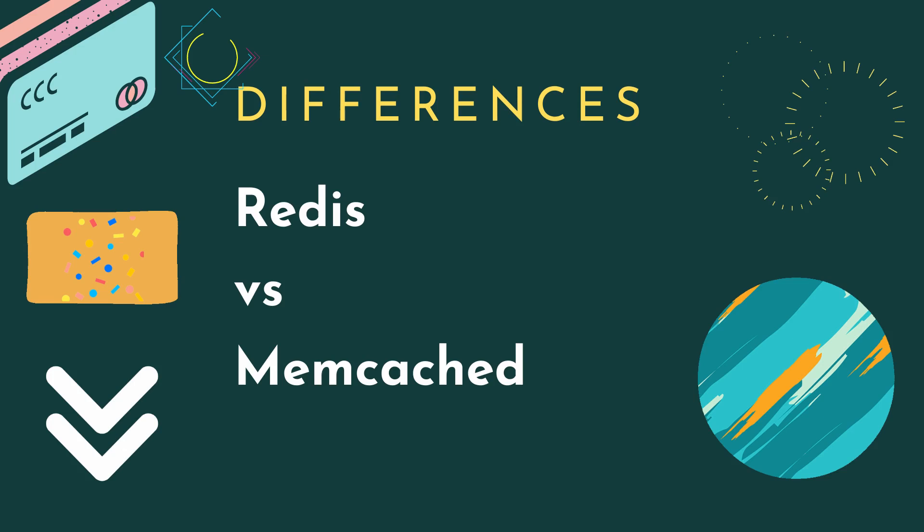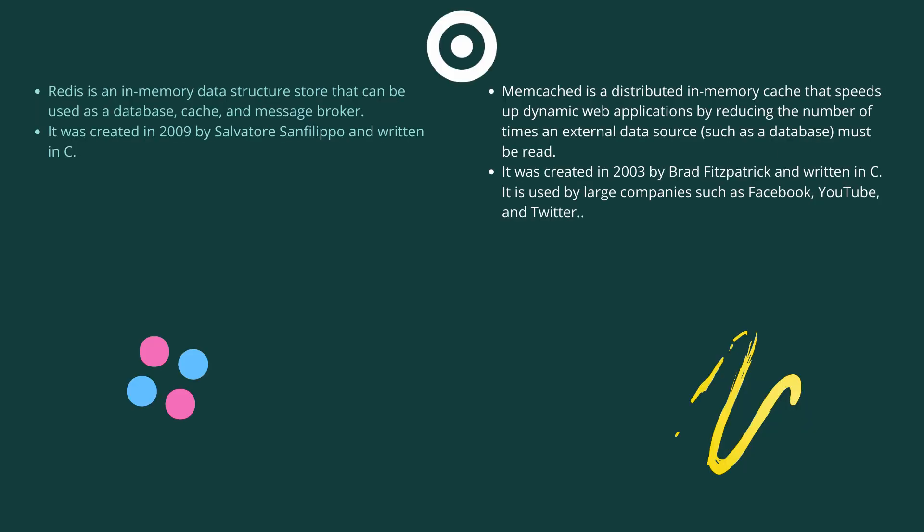In this video we are going to see the difference between Redis and Memcache. Redis is an in-memory data structure store that can be used as a database, cache, and message broker. It was created in 2009 and written in C. Memcache is a distributed in-memory cache that speeds up dynamic web applications by reducing the number of times an external data source must be read. It was created in 2003 and also written in C.